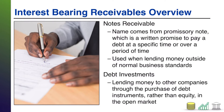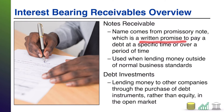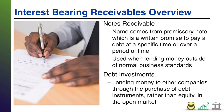When we think of interest-bearing receivables, typically what we are going to think of is some sort of written arrangement that specifies terms of repayment and of interest accrual. One of the most common ones that you'll see in business is a note receivable. The name for note receivable comes from a promissory note, and basically this is a written promise to pay a debt at a specific time or over a period of time. So it could say you owe this amount of money in three years, or it could say you owe this amount of money payable in equal monthly installments for three years. But it is a written arrangement.